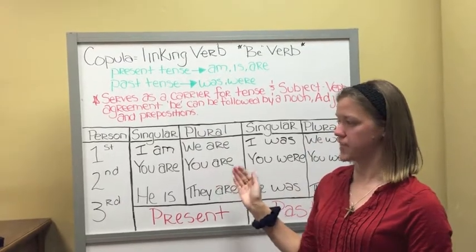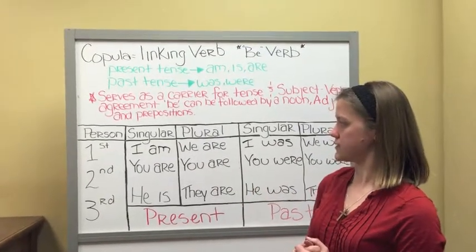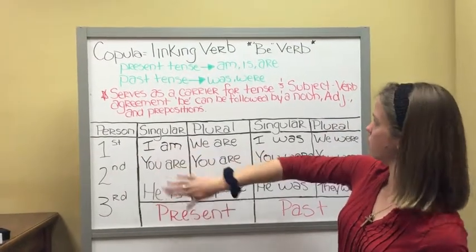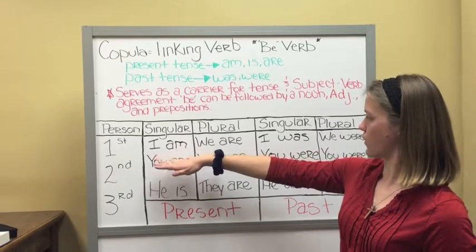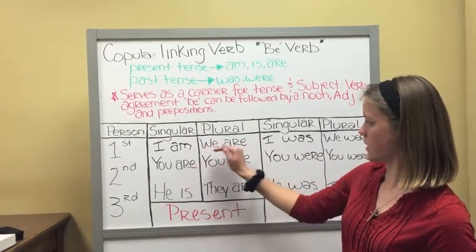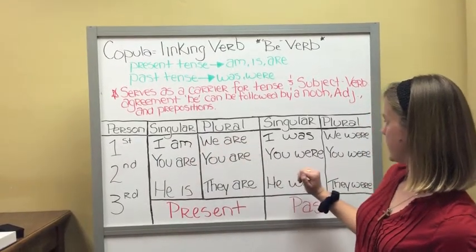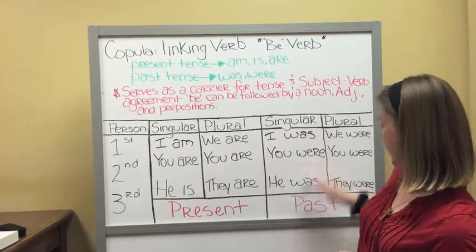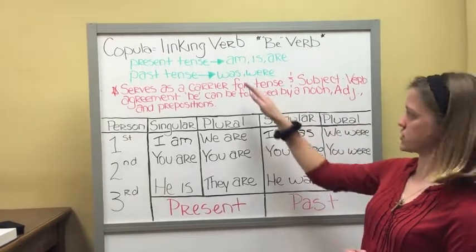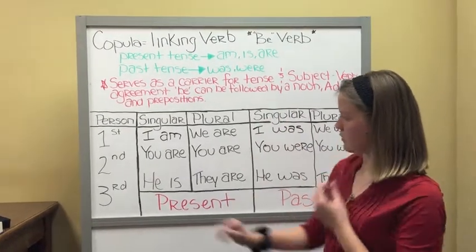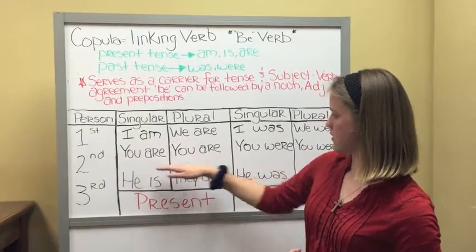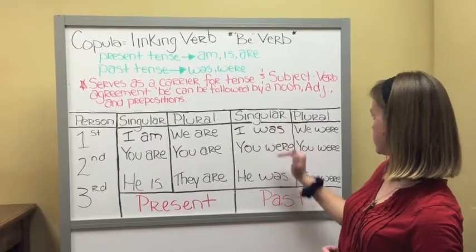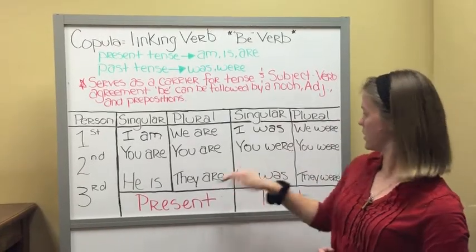This is a chart from our textbook called The Grammar Book. As you can see, for first person, the copula be is used for both present tense — am, are — and we do have is for third person. For past tense, was and were are used, just like we said before. For second person, you can use the present tense form are, and for past, singular and plural both use were.